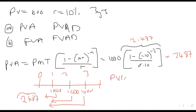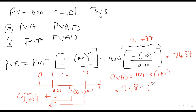To find the present value of an annuity due, we simply multiply the present value of the ordinary annuity times (1 + R). So 2,487 times 1.10 gives the present value annuity due.